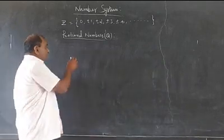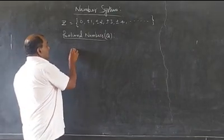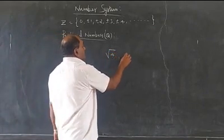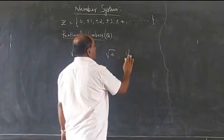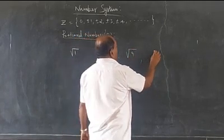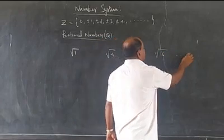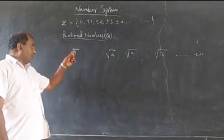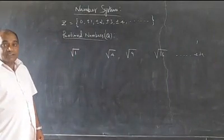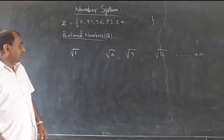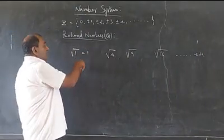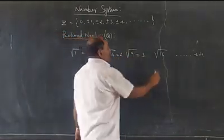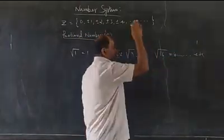Recall squares and square roots. The square root of 1 is 1, square root of 4 is 2, square root of 9 is 3, and square root of 16 is 4. These numbers are perfect square roots, and I am sure we know these numbers.